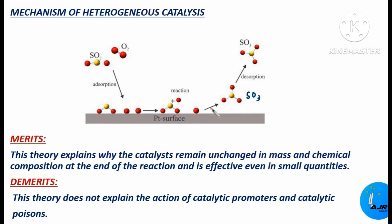After forming sulfur trioxide, in the fourth step it starts to desorb from the catalyst. Sulfur trioxide starts desorbing, and in the last step it diffuses out of the platinum surface, leaving the platinum surface free enough to accept new reacting species.